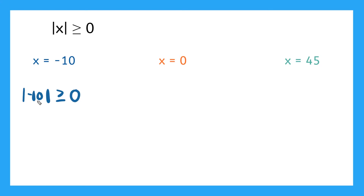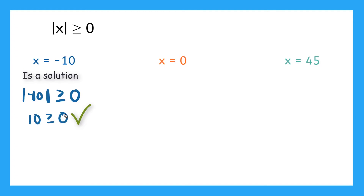If we evaluate our absolute value, we know negative 10 is a distance of 10 from zero. So we have 10 is greater than or equal to zero. Is 10 greater than or equal to zero? Of course. So negative 10 is a solution to our inequality.